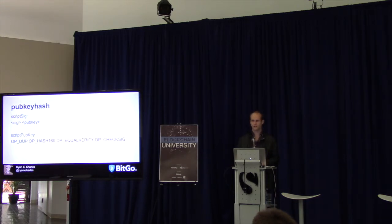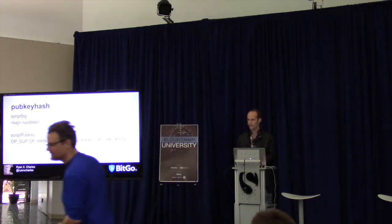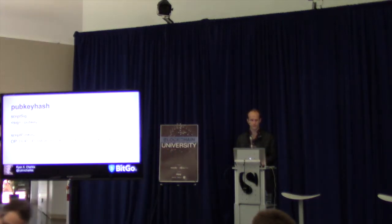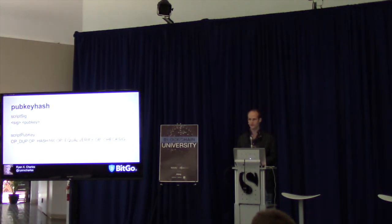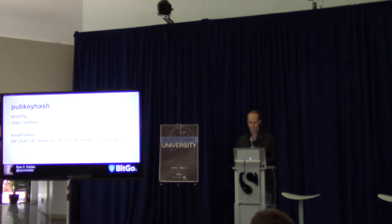Pub key hash is one — pretty much the original transaction type that people have used for the entire history of Bitcoin, and still use. Many people today are converting to pay-to-script-hash multi-sig; however, I think as of today most Bitcoins are still secured using single-signature pub key hash outputs. This is just what that looks like — we ran through the script interpreter of that.